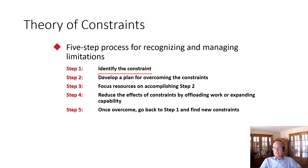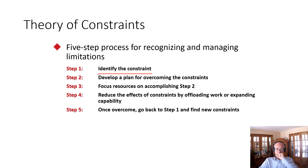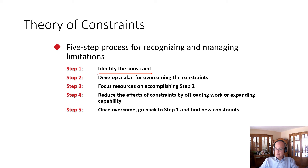For example, we could introduce a second hygienist. Patients would go to one hygienist or the other, shortening the bottleneck to 12 minutes. Once you've overcome a bottleneck, something else will become the new bottleneck — similar to a second critical path in project management. At that point, you go back to step one and find the new constraint.